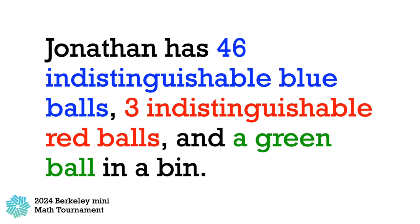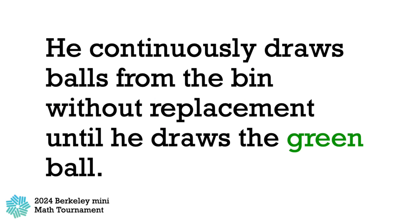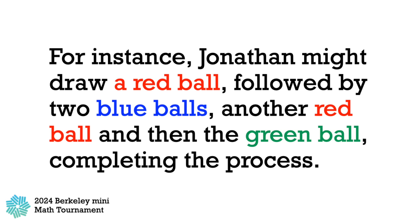Jonathan has 46 indistinguishable blue balls, 3 indistinguishable red balls, and a green ball in a bin. He continuously draws balls from the bin without replacement until he draws the green ball. For instance, Jonathan might draw a red ball, followed by 2 blue balls, another red ball, and then the green ball, completing the process.